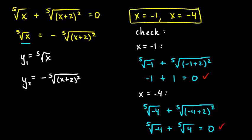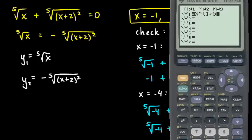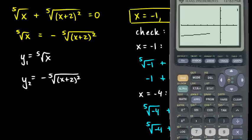Notice that if these two expressions are equal to each other, then the y values should be the same at the x values where these functions cross. Let's graph this on the calculator. I'll enter y1 as x to the power of one-fifth — that's my fifth root function.